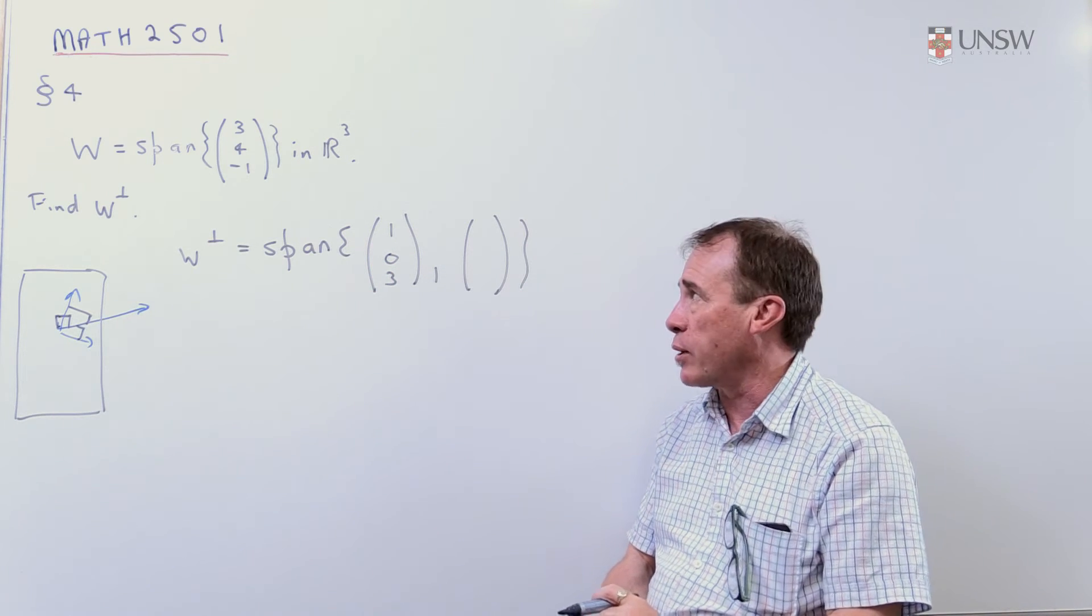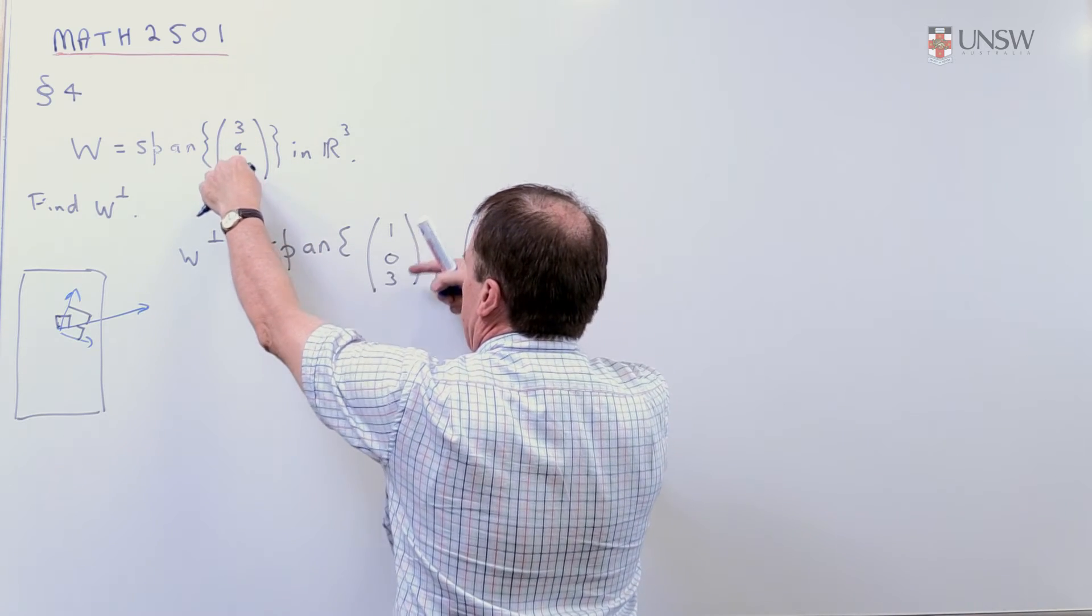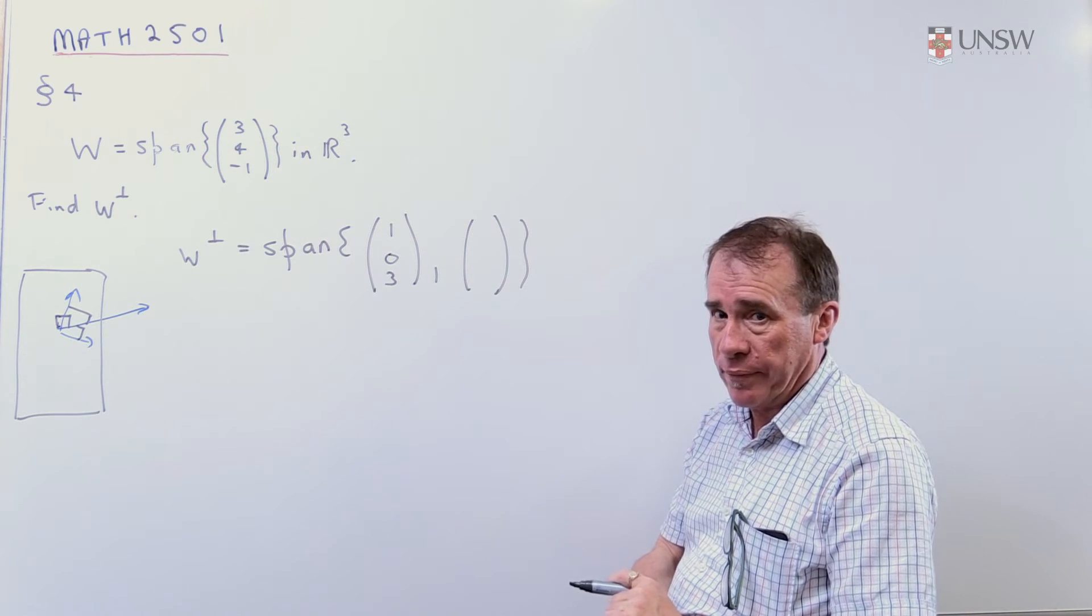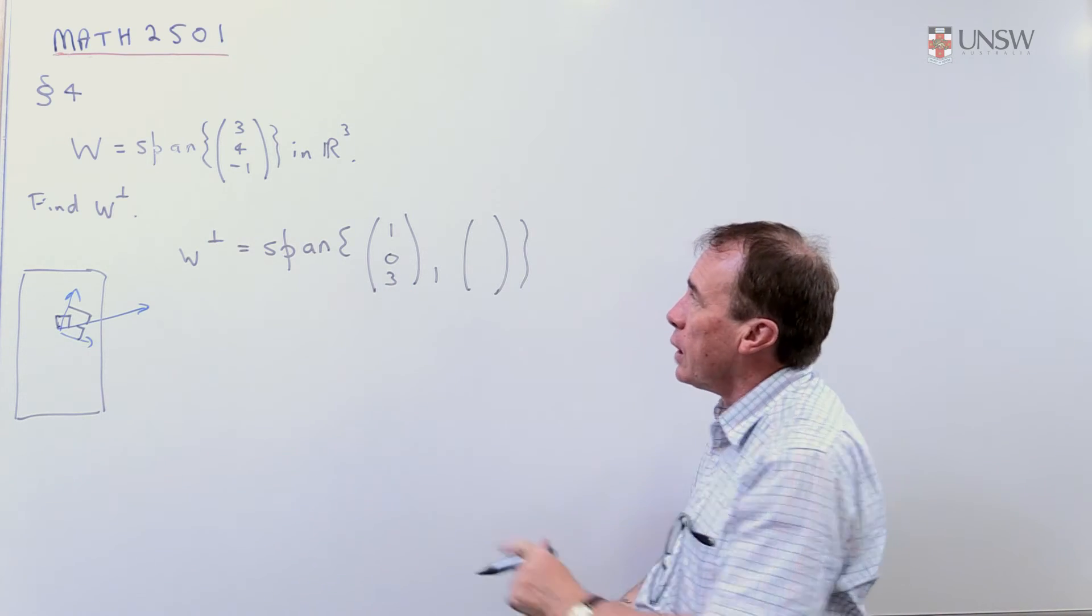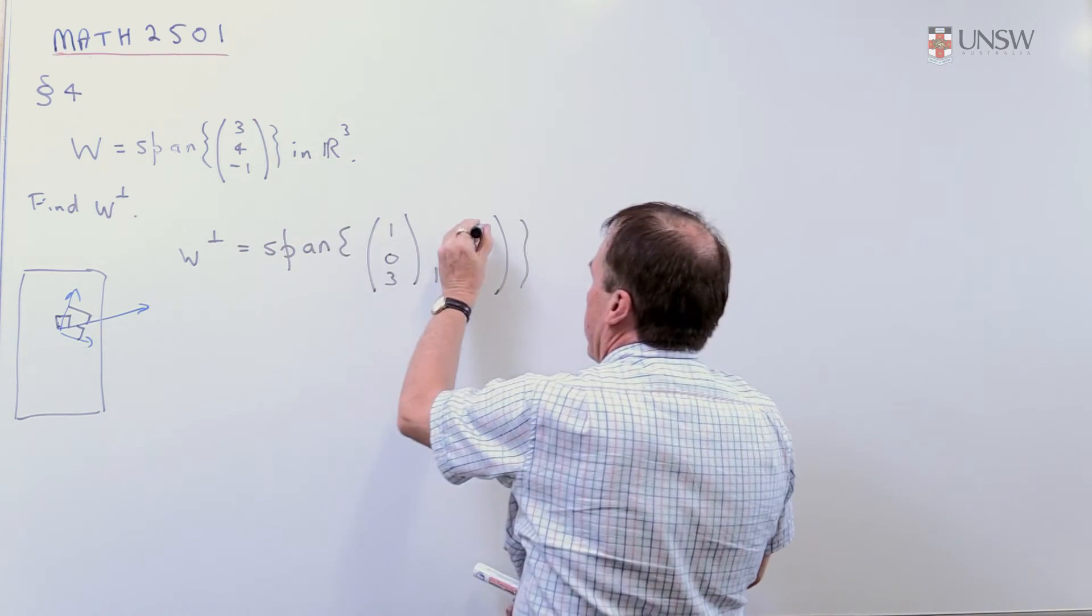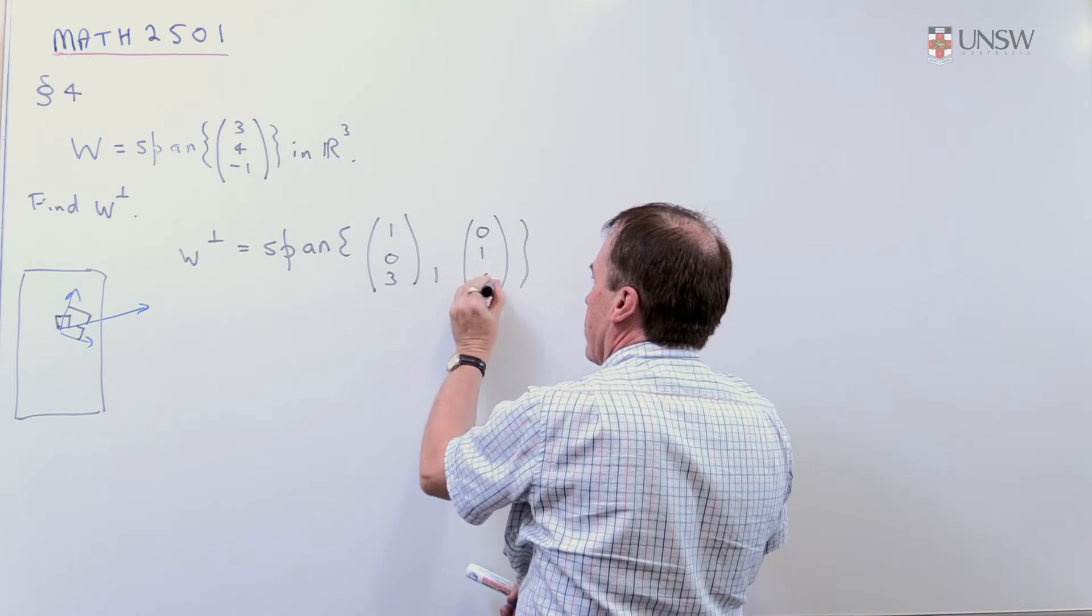Just check the dot product works. You get three plus zero minus three is zero, so that's perpendicular to it. I want another one that's linearly independent with this one. I may as well get rid of the first entry. I'll take one of those and four of those.